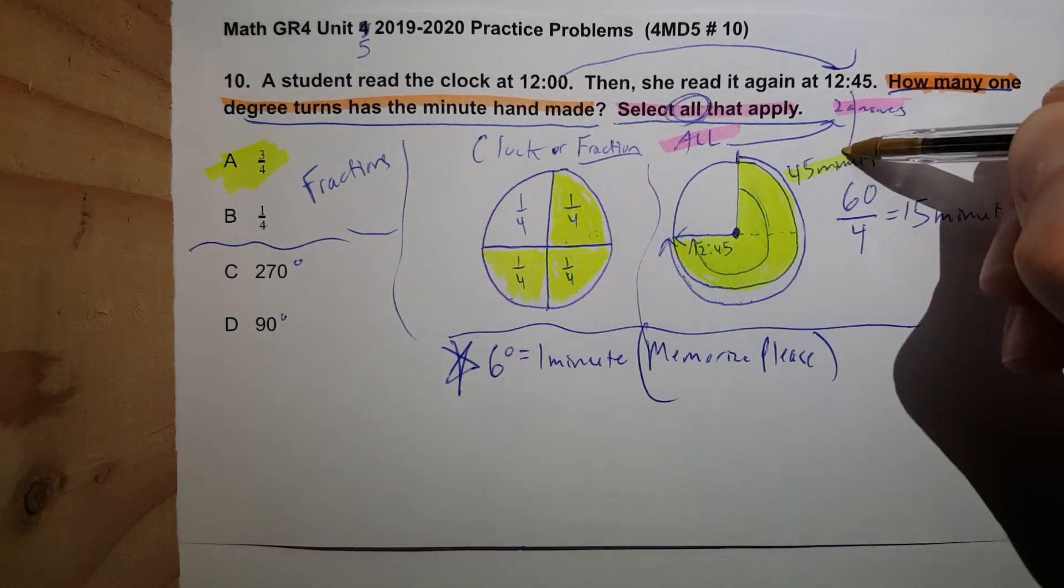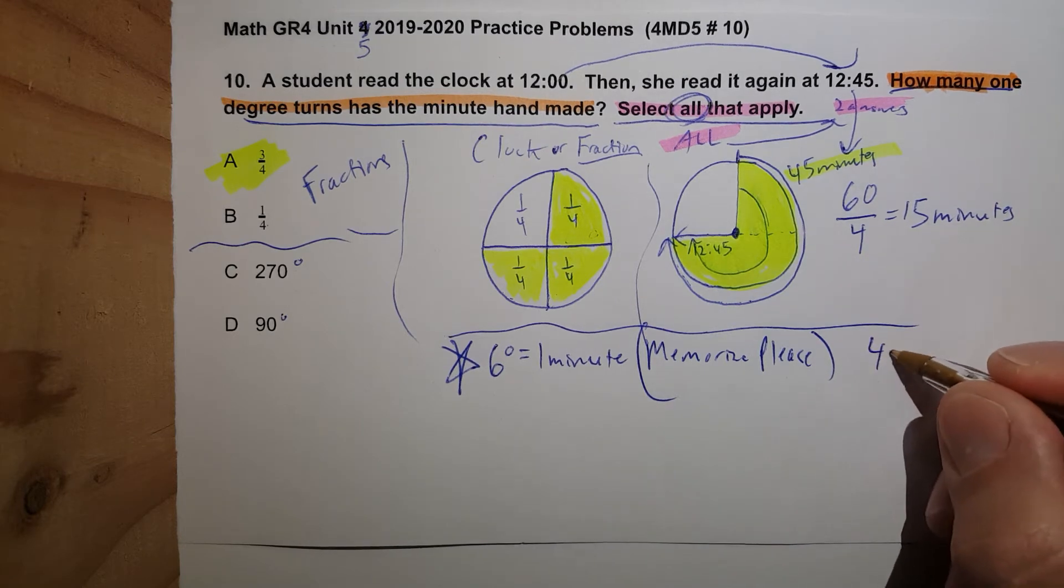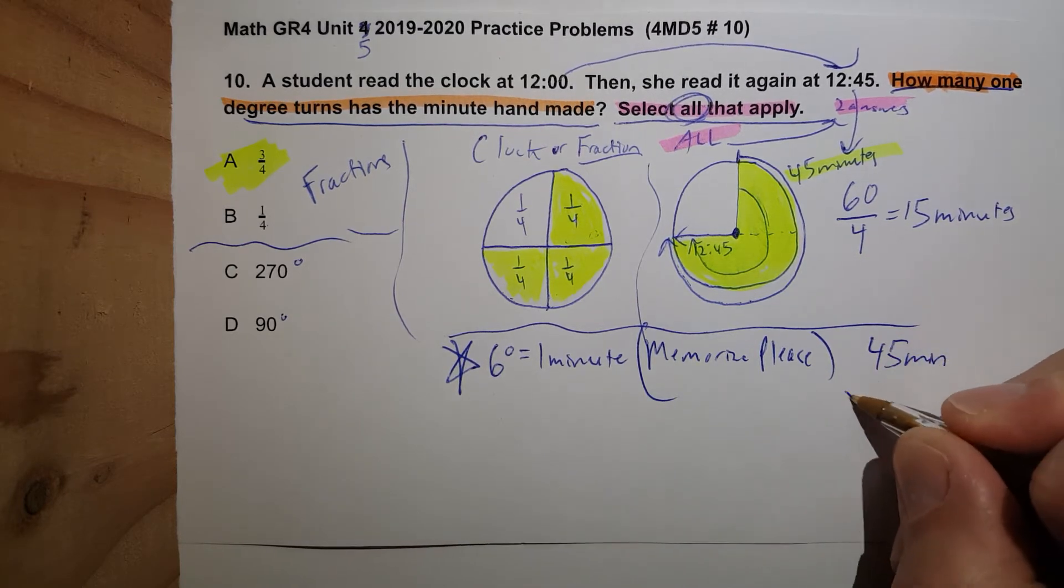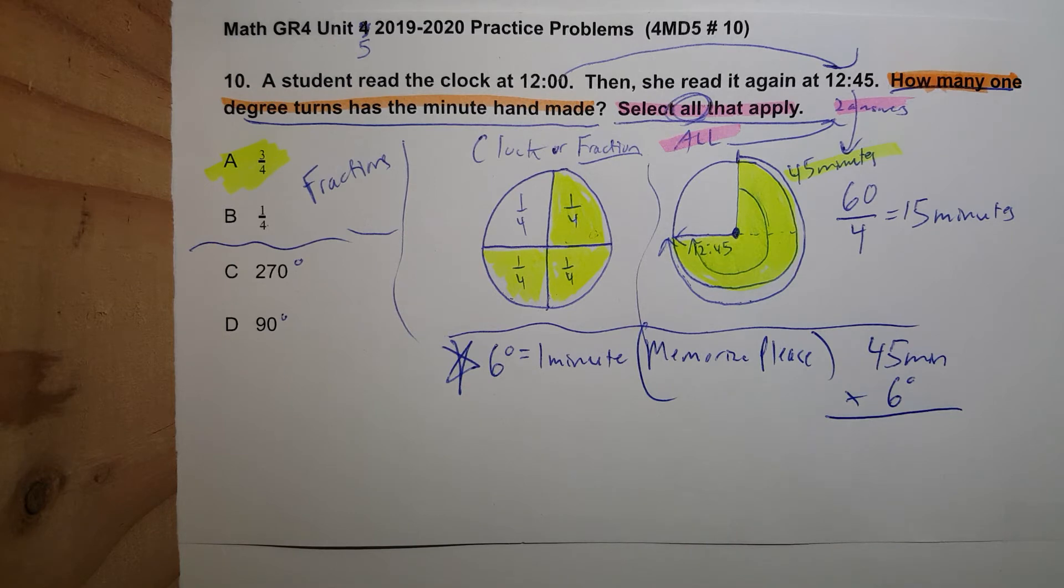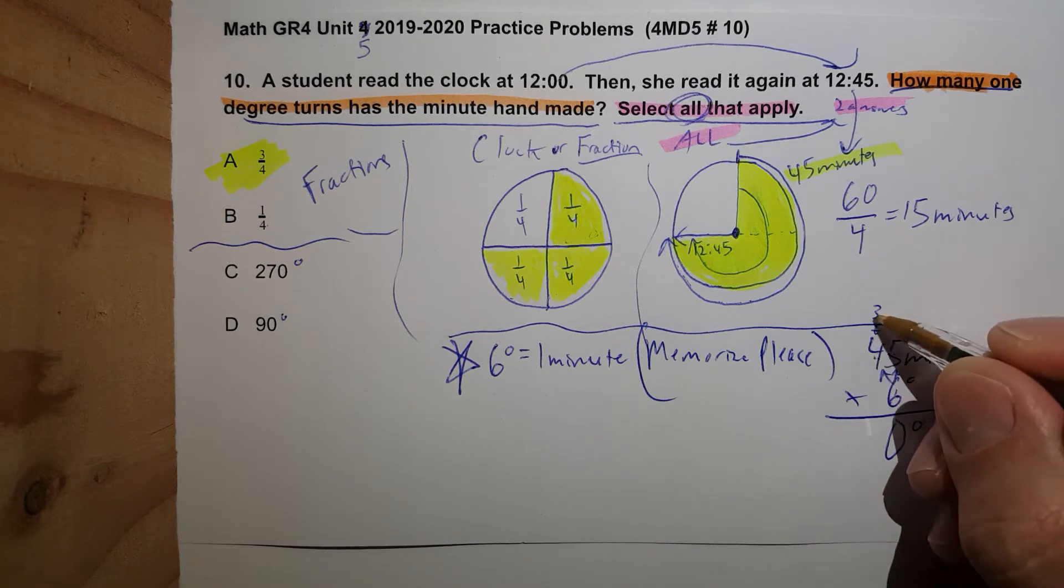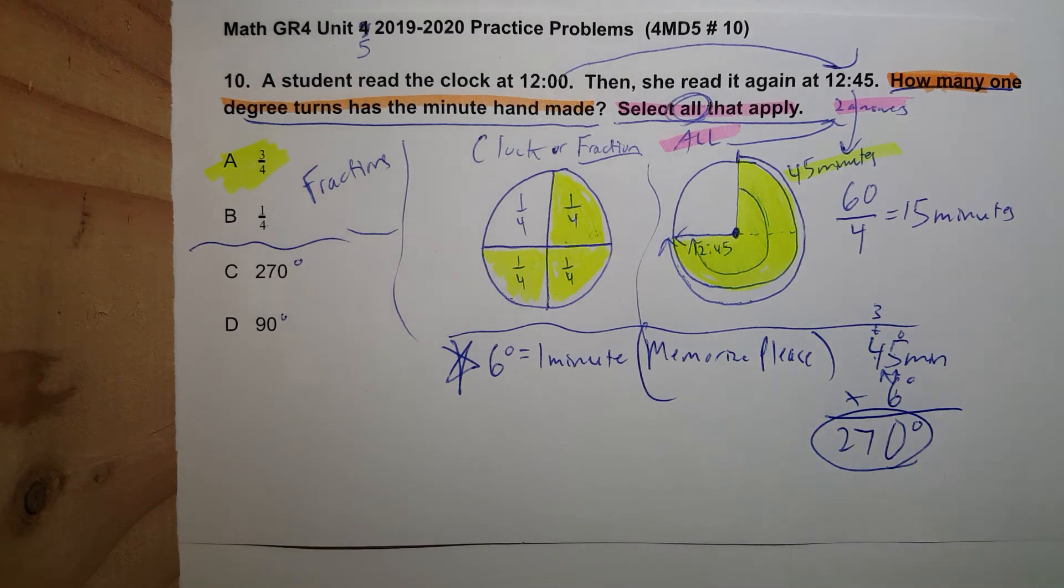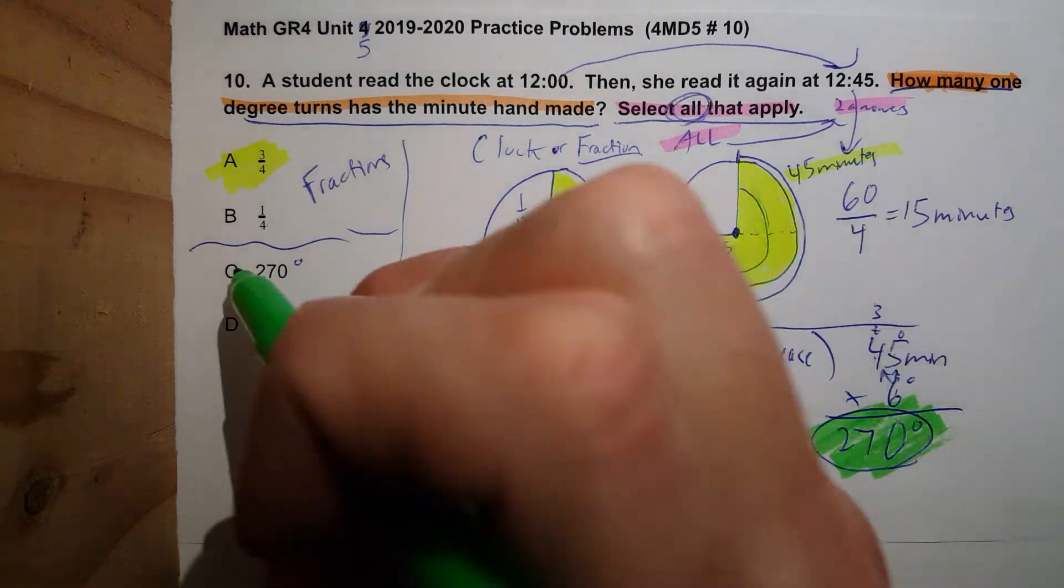12 to 12:45 is 45 minutes, so now I use my multiplication: 45 minutes times 6 degrees. We're gonna find the number of degrees right now. One's ten, six times five is 30, I carry the three, six times four is 24, 25, 26, 27. 270 degrees, 270 degrees, 270 degrees, there it is.